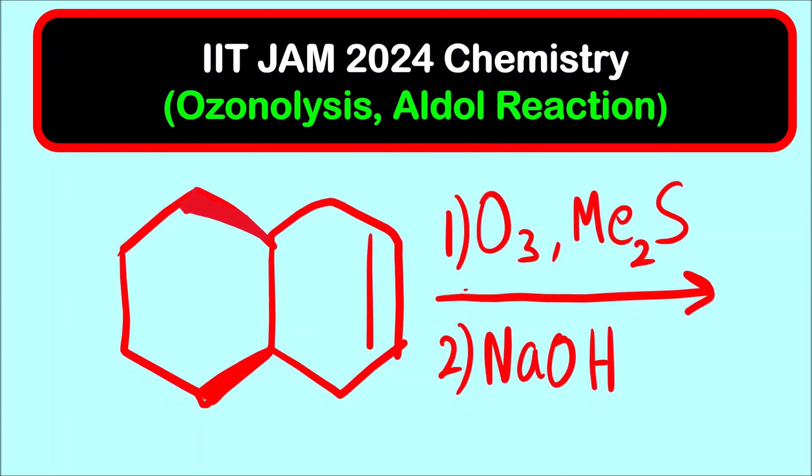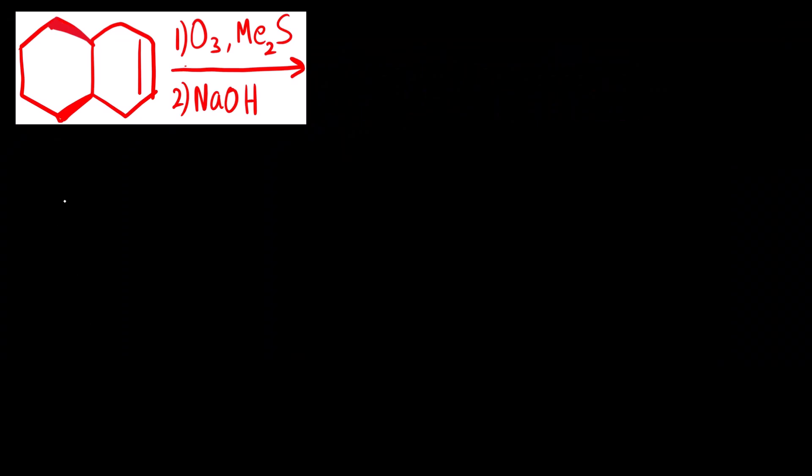This is a reactant that is given and the reagents are given, we have to identify the major product. What is given to us is an alkene.